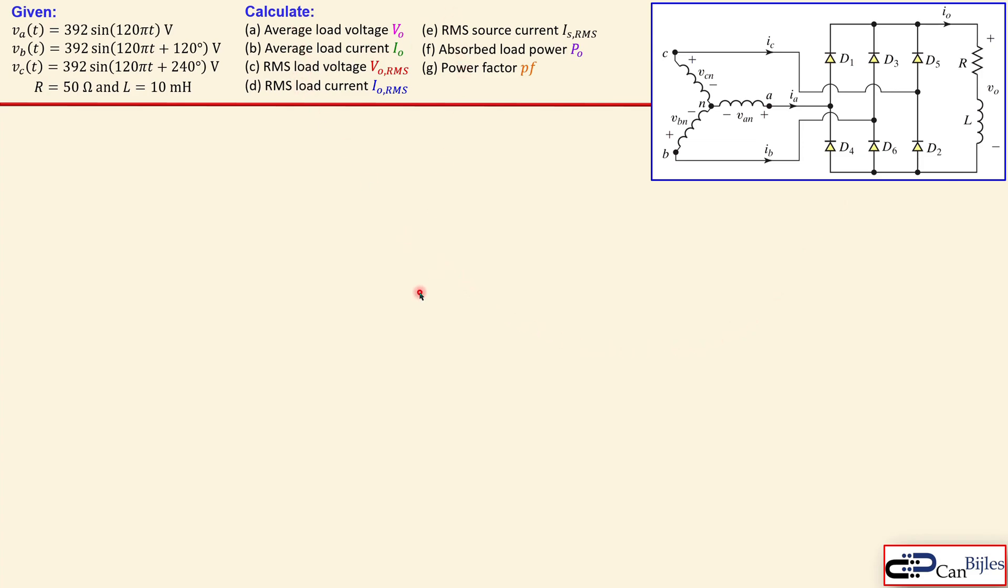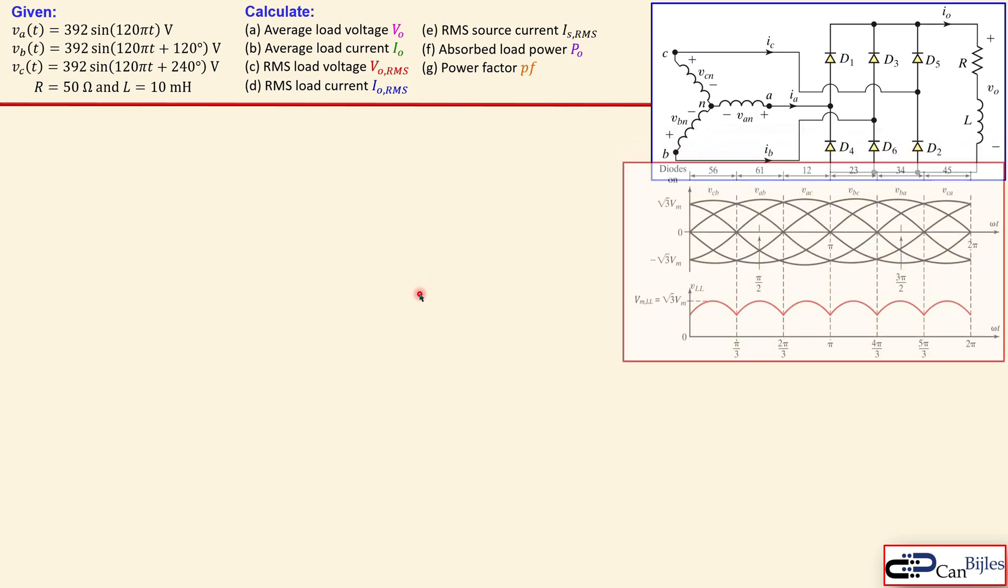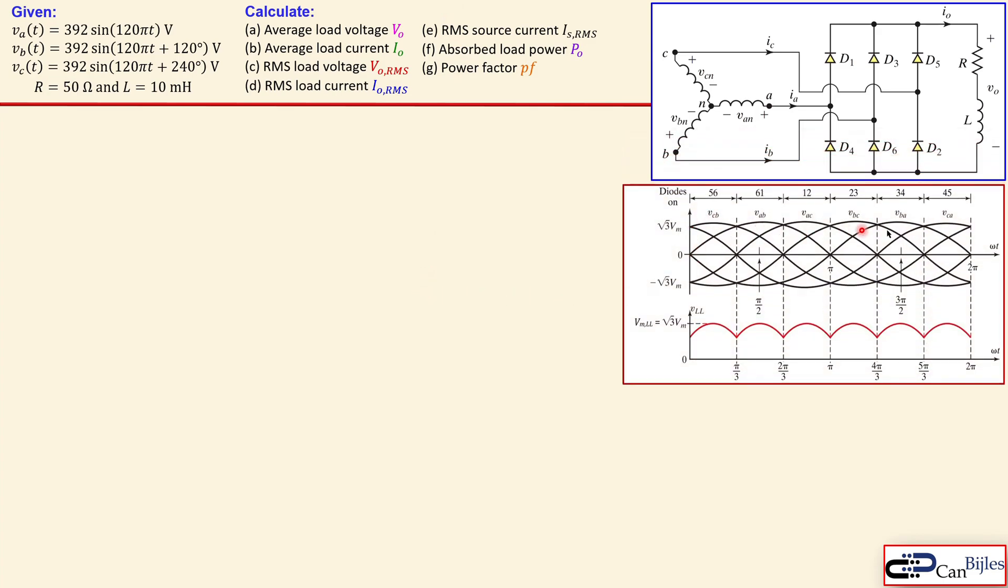Again, we like to calculate these values for this example. Again, the waveform here which depicts our line-to-line voltages and this is the line-to-line voltage what we have at the output. Okay, let's go to the calculations.